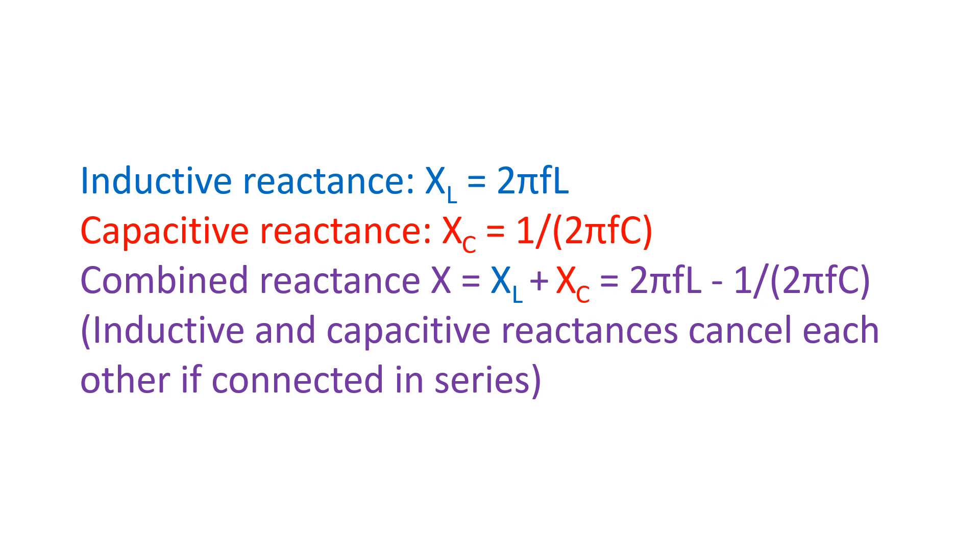Inductive reactance can be calculated by the formula 2 pi f L where F is frequency in Hertz and L the inductance in Henrys. Capacitive reactance is 1 by 2 pi f C where C is the capacitance in F.